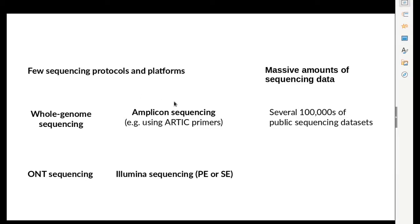First, all SARS-CoV-2 sequencing data currently available is rather similar. There are essentially just a few sequencing protocols for sequencing the viral genome. You have whole genome sequencing approaches, which need a bigger amount of starting material but provide unbiased data across the viral genome, and you have the ampliconic approaches, in which the viral RNA or its reverse-transcribed DNA is first amplified with specific primer sets so that combined PCR amplicons cover the whole genome. This ampliconic approach is the dominating one during this pandemic because it works with really low amounts of starting material, like those obtained from diagnostic swabs for regular PCR diagnosis.